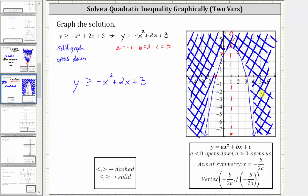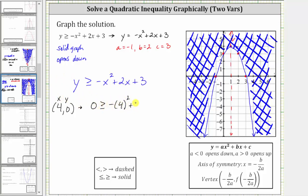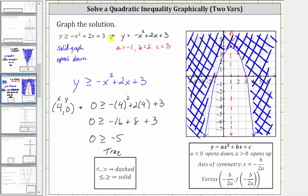I always recommend selecting a test point to make sure the ordered pair satisfies the original inequality. Let's select the point with ordered pair four comma zero to verify. We substitute four for x and zero for y, which gives us zero is greater than or equal to the opposite of four squared plus two times four plus three. Simplifying on the right: the opposite of four squared is negative 16, plus eight, plus three equals negative five. Zero greater than or equal to negative five is true, which means we did shade the correct region. Any point in this region, including the points on the parabola, will satisfy the original inequality, and therefore this region is the solution to the given inequality.